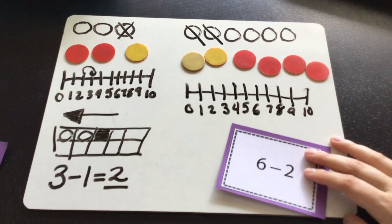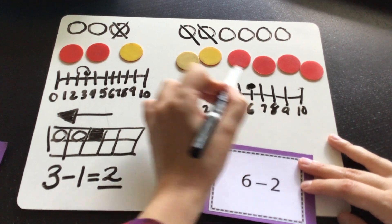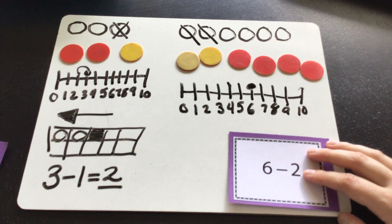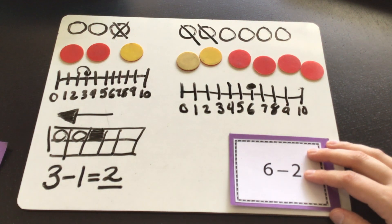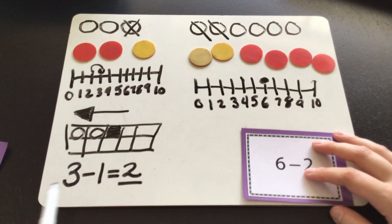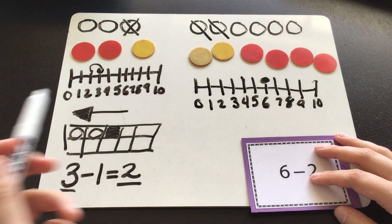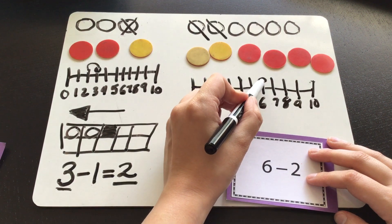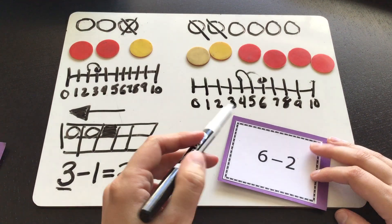The first number tells us where we start, so we're starting at the number six. The second number tells us how many we hop backwards — how many we hop toward zero. Our number is getting smaller. When you're doing subtraction, your answer should be smaller than your first number. Otherwise, you've done something not the right way. So we start at six, we hop backwards two: one, two. That second number tells us how many hops we make.